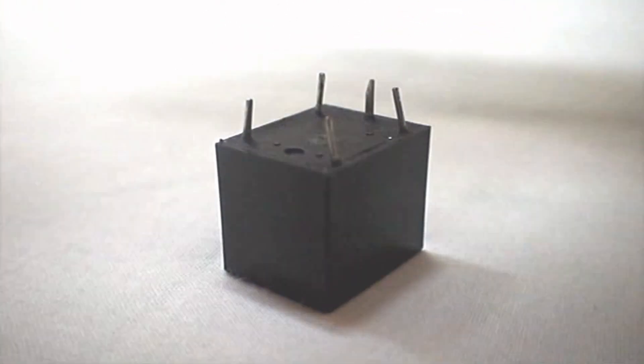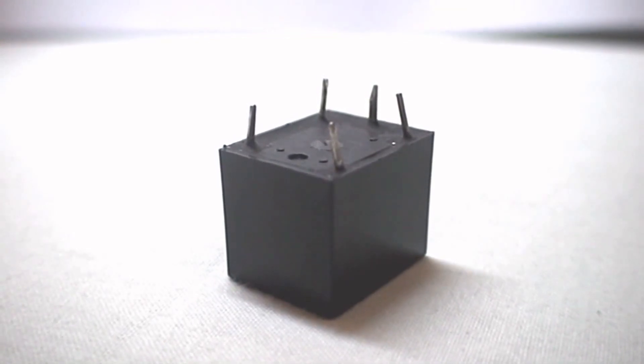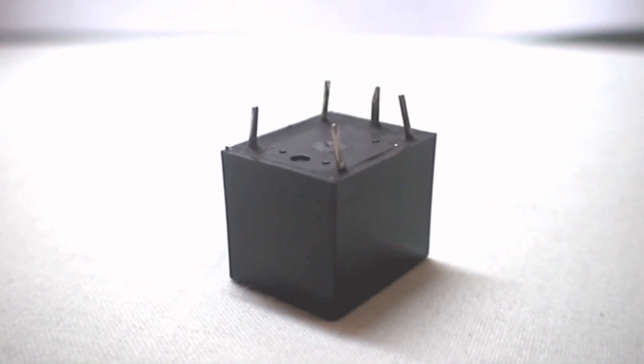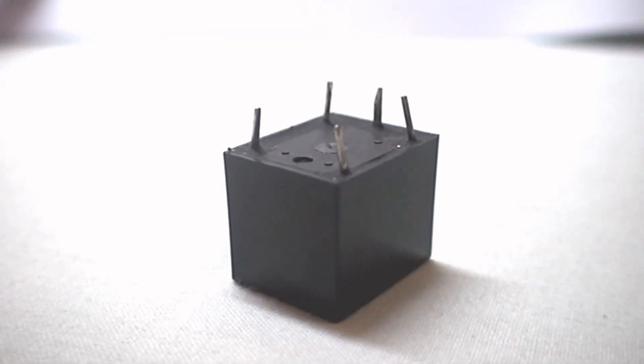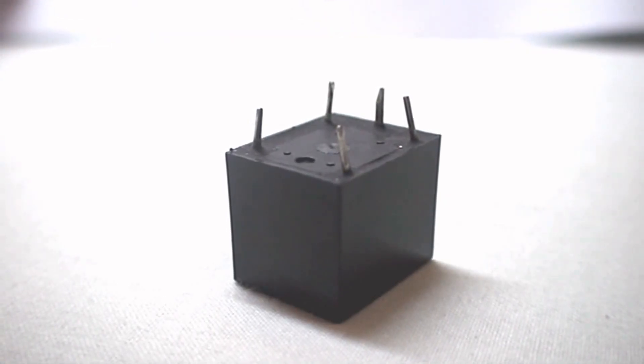A relay is an electrical device that allows current flowing in one circuit to control the current flowing in another circuit. Relays are often used in situations where a small current flow can turn on a machine that requires a large current flow or high voltage. This makes a system much safer.